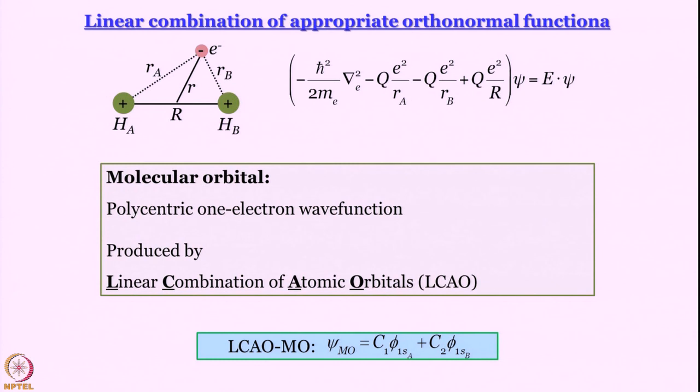In this lecture, we are going to complete our discussion of molecular orbital theory of H2 plus, the dihydrogen cation. So far, we have written down the Hamiltonian, and the reason we are working with H2 plus, as we have said several times, is that it is a unique case of a one-electron molecule.